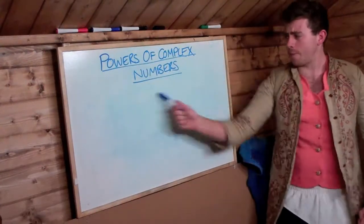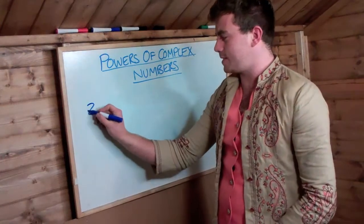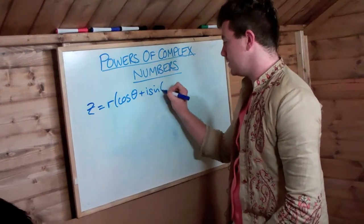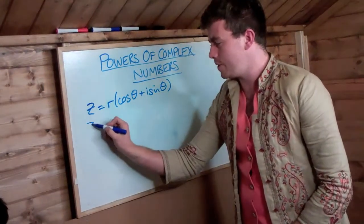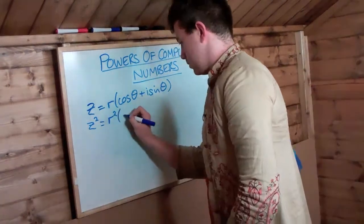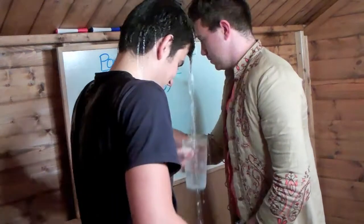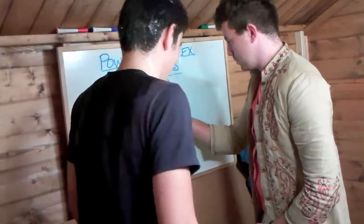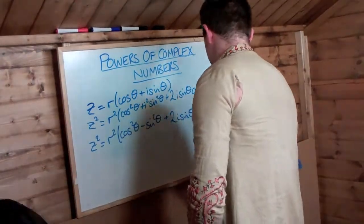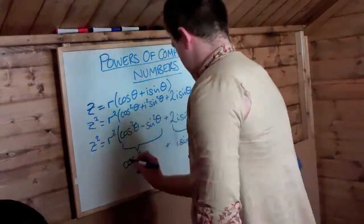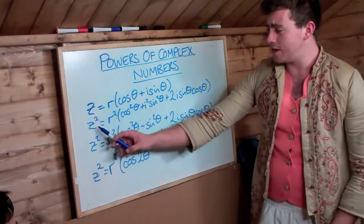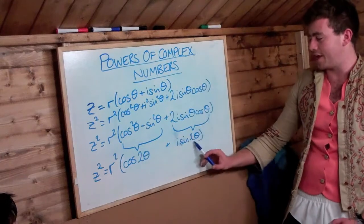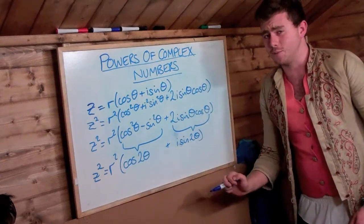Now, we're going to powers of complex numbers. So, say you have a complex number z equal to r cos theta plus i sine theta, and you wanted to square z, you would do it as follows. So here, as we've squared z, we've squared r, and the 2 has gone also down next to the theta. And this is the foundations to de Moivre's theorem.